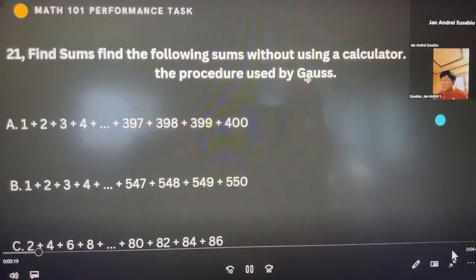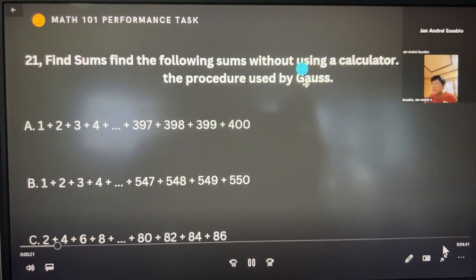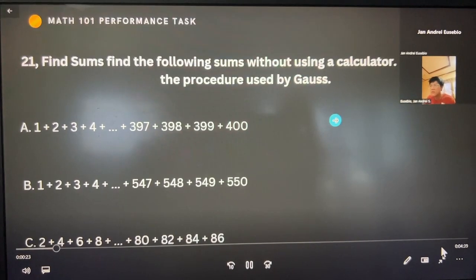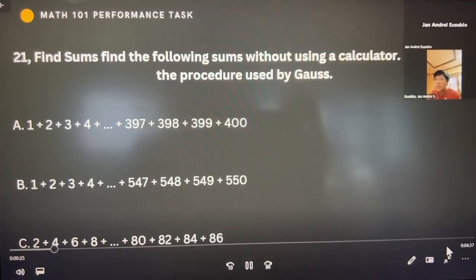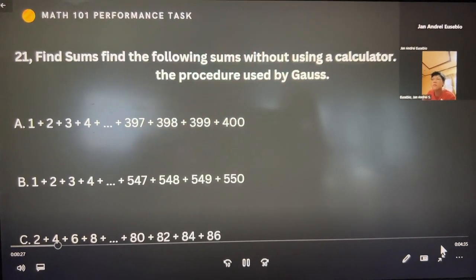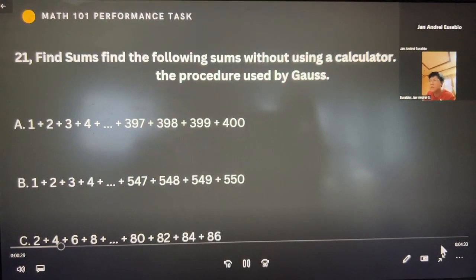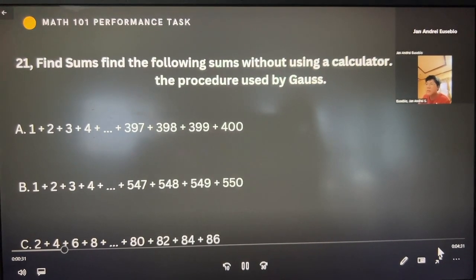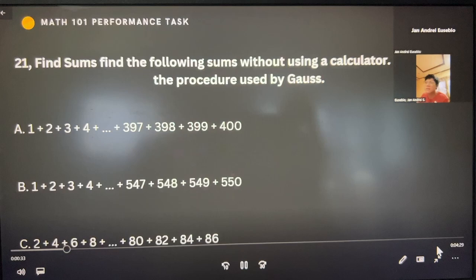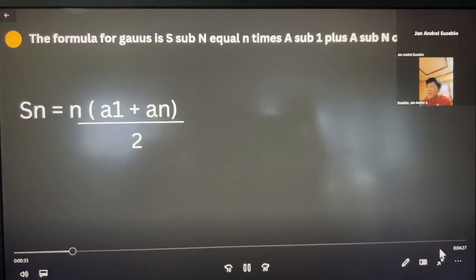The question that I want to choose, and the question I choose is 21: Find the following terms without using a calculator. Hint, apply the procedure used by Gauss in letter A, B, and C.